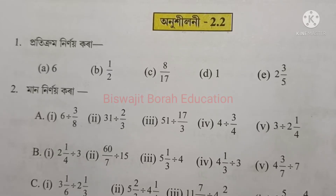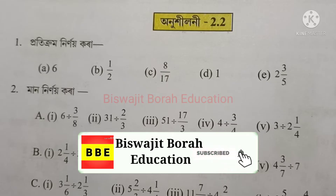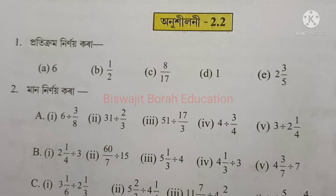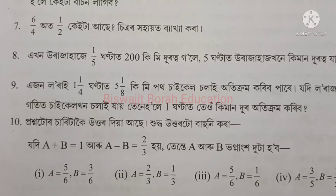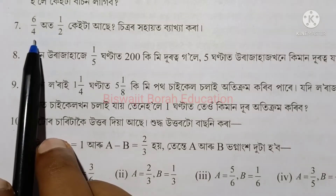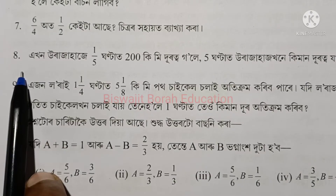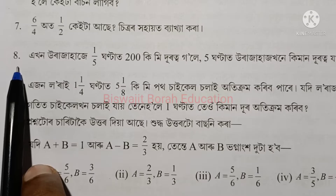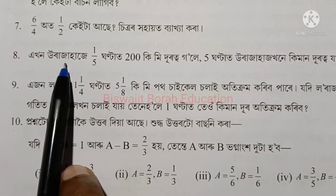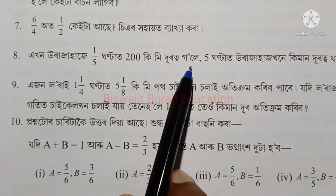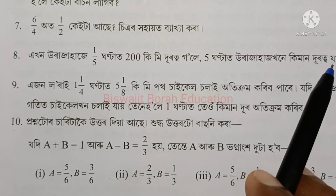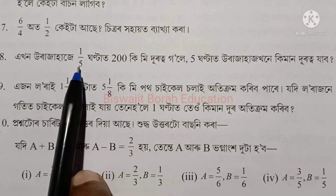Welcome to today's session. In this problem, a plane (ura jahaj) travels a certain distance. In 5 hours it covers a given distance. Given 1 hour and specific fractional time intervals, we need to determine how far the aircraft travels based on the given conditions.